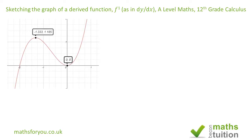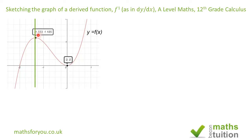Here we've got a cubic function given the generic title of y is equal to the function of x. On this graph we have two turning points. We create regions bounded by x = -1.333, which is the x-coordinate of the first turning point, and x = 0, which is the x-coordinate of the second turning point, or the y-axis.